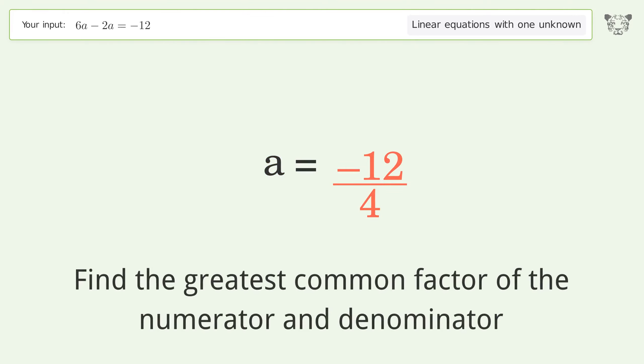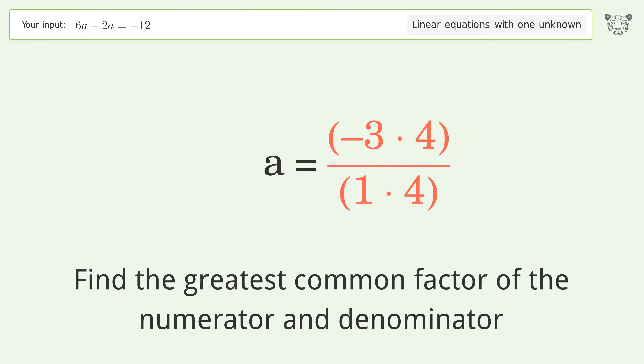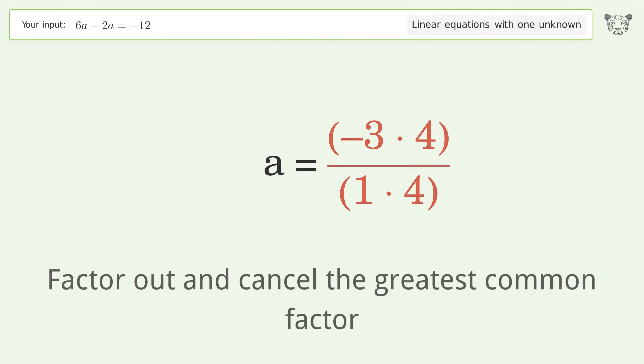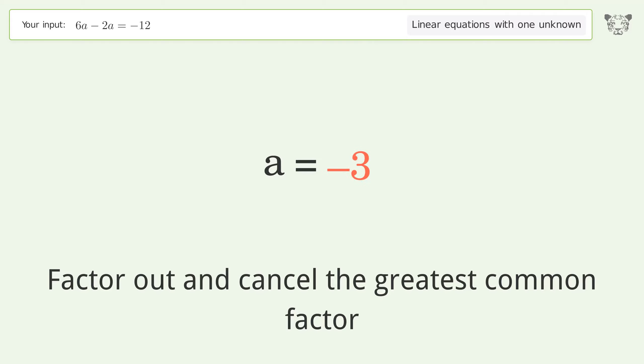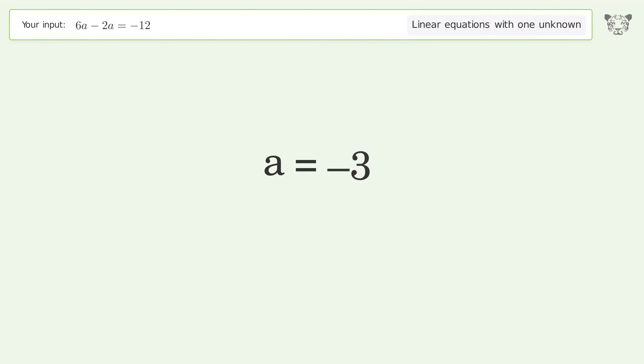Find the greatest common factor of the numerator and denominator. Factor out and cancel the greatest common factor. And so the final result is a equals negative 3.